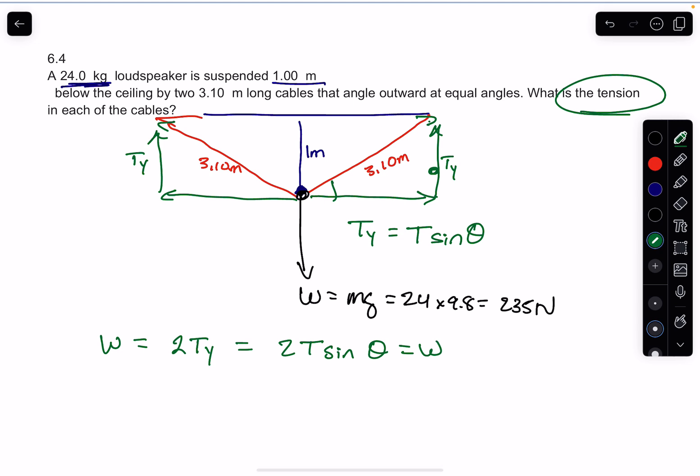But now we have to say, well what's theta? How do you find theta? We know that this length here is one meter and this hypotenuse is 3.10 meters. You can use sine, cosine, and tangent to find what theta is. You'll have to do an inverse.